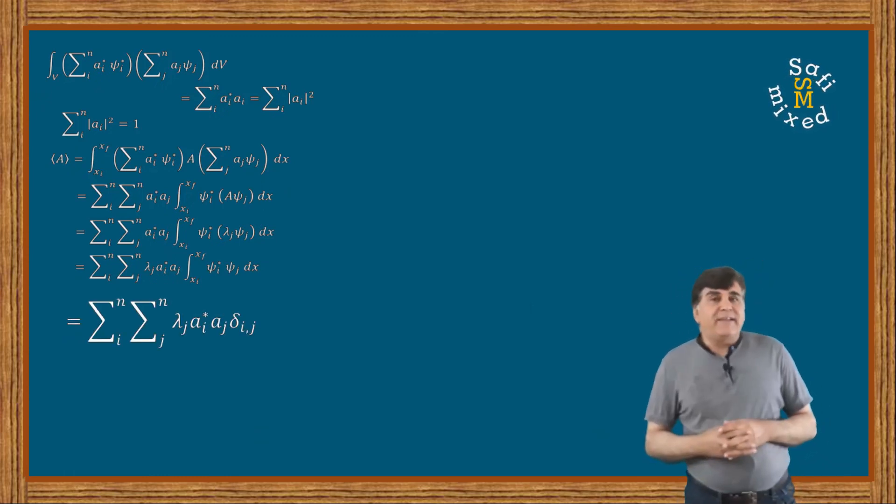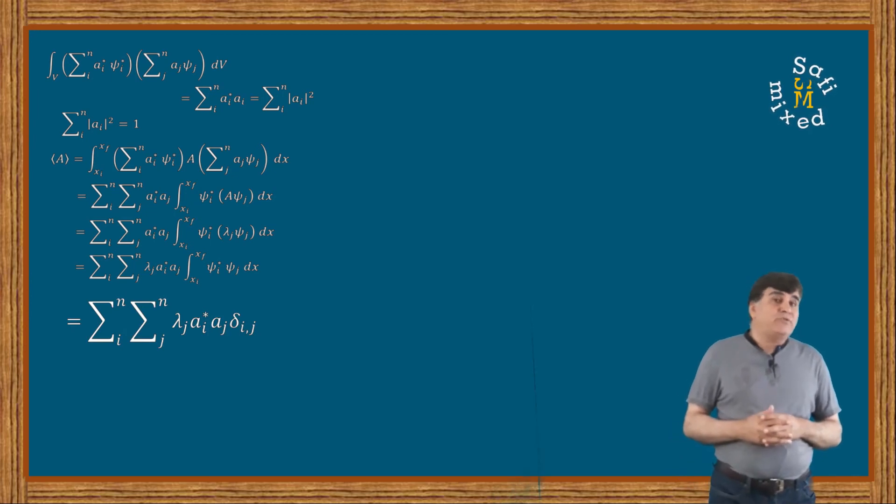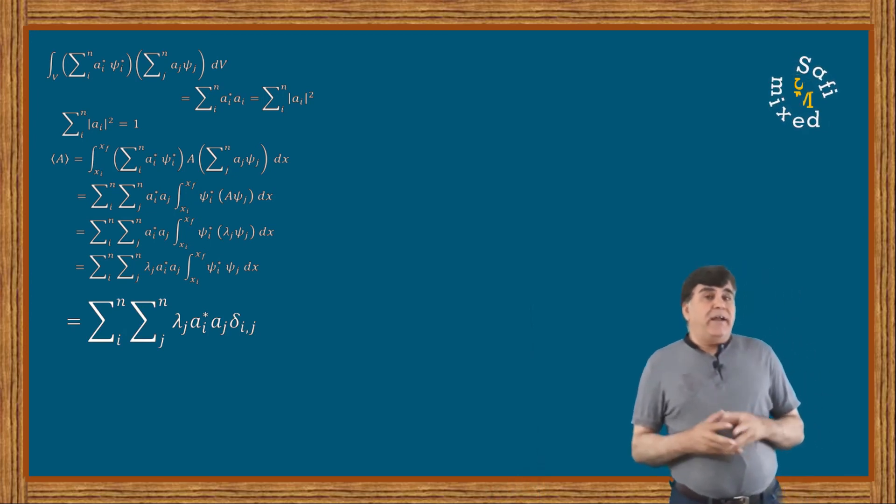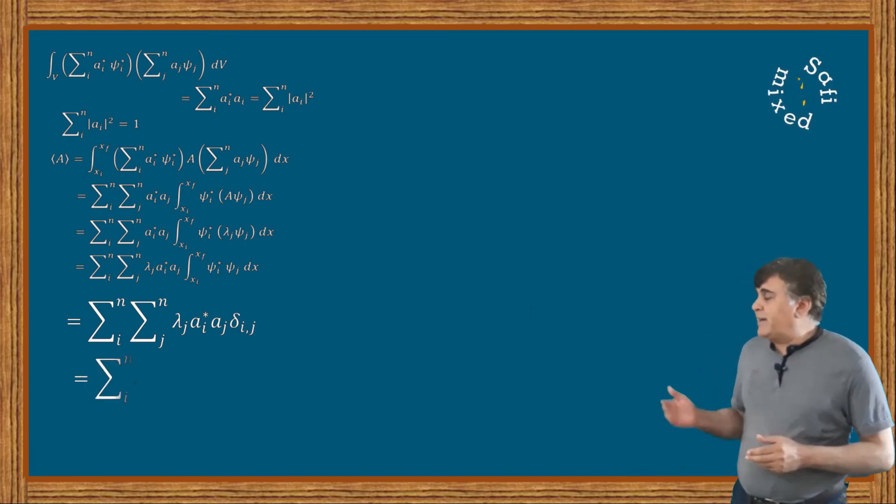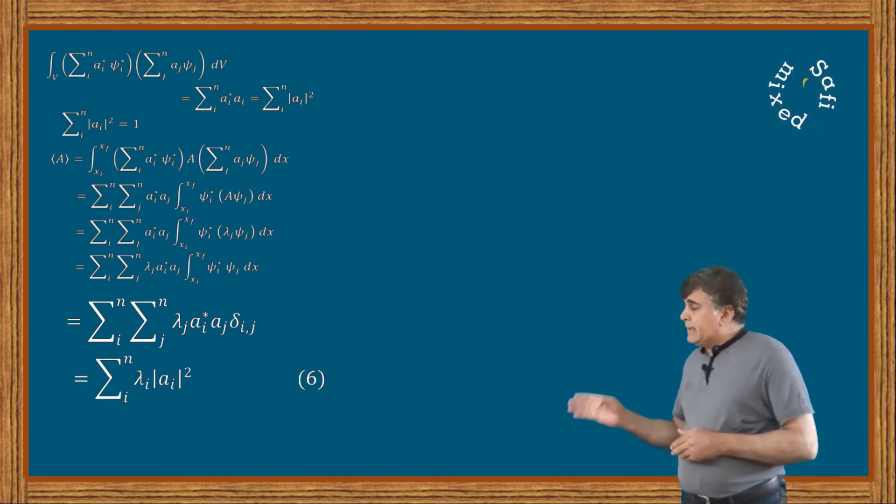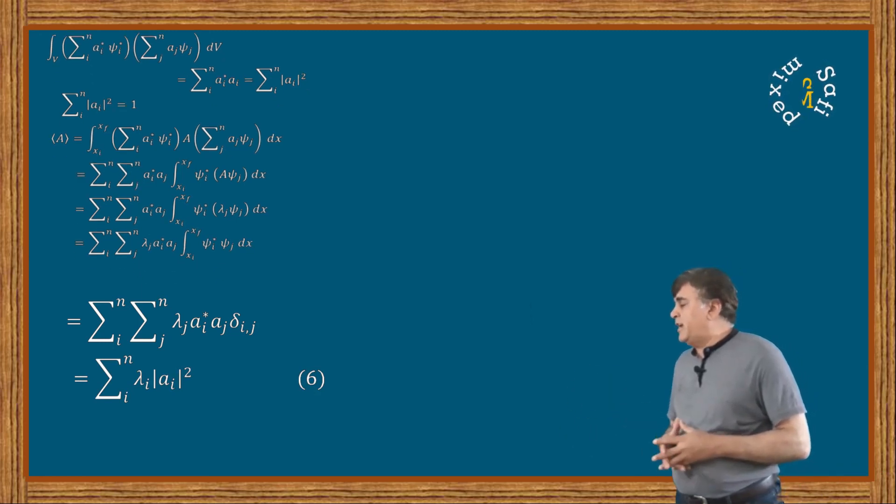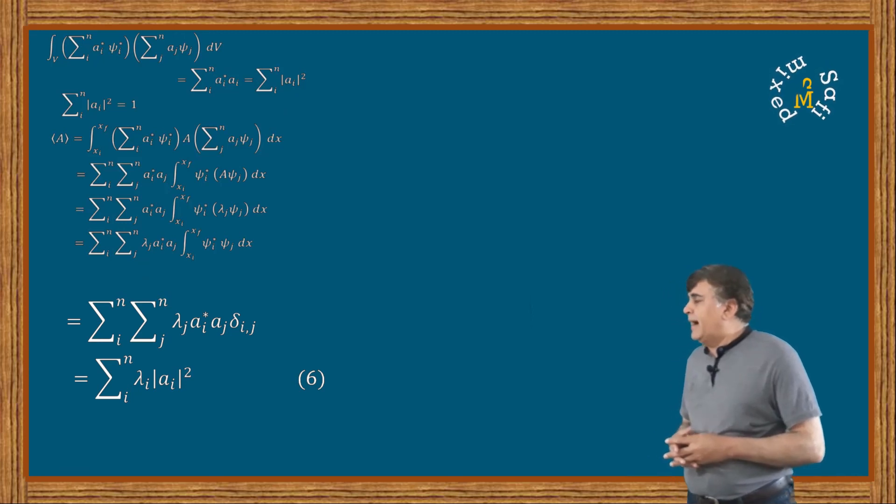Once again, the delta function will kill one of the two summations, and in this case I drop the summation over j again and write the summation over i, λᵢ times the modulus squares of the probability amplitude with subscript i.